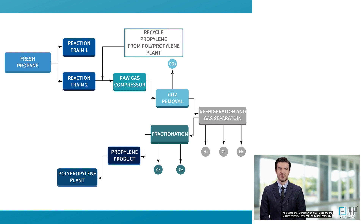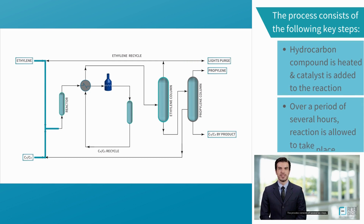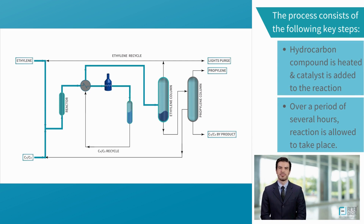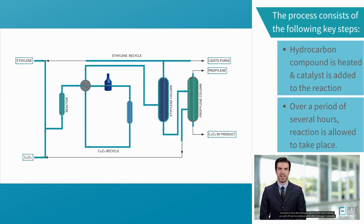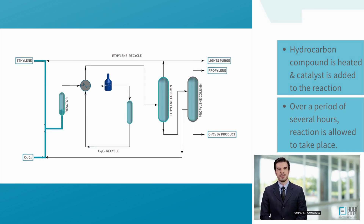The process of dehydrogenation is a complex one and requires several steps to be carried out efficiently. First, the hydrocarbon compound is heated and the catalyst is added to the reaction. Then, the reaction is allowed to take place, typically over a period of several hours. During this time, the hydrogen atoms in the hydrocarbons are split off and recombined with other hydrogen molecules to form other hydrocarbons.